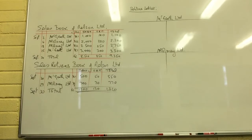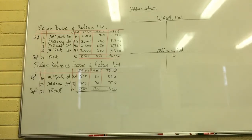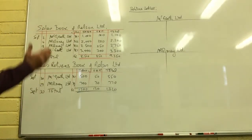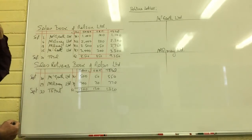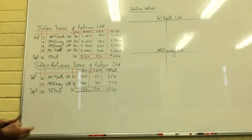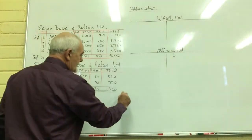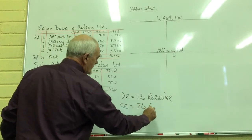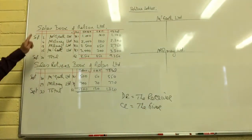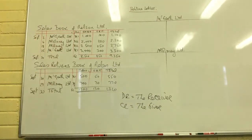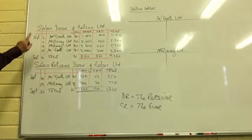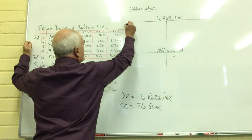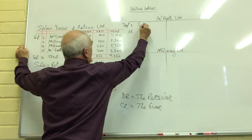Now we must transfer that information into the ledger. Remember the ledger is where you keep accounts. Because McGrath and Maloney owe us money, they're debtors and we keep their accounts in the debtors ledger. Remember your rule: debit the receiving account and credit the giver or the giving account. So because we've sold goods on credit to McGrath and Maloney, we're going to debit them because they received — they haven't paid us yet, that will be later.